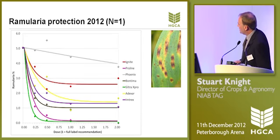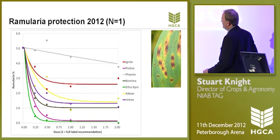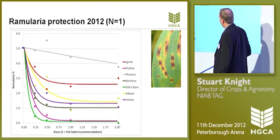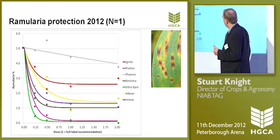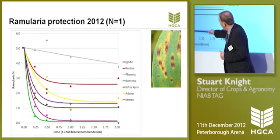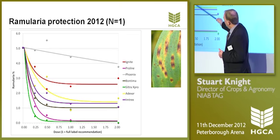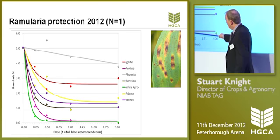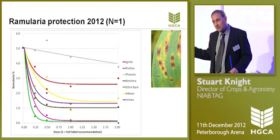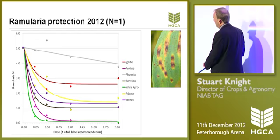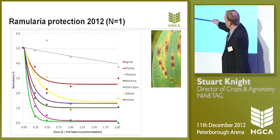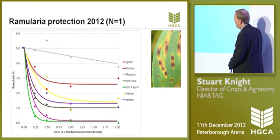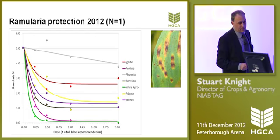Moving on to ramularia — a slightly different story. This is just from one trial in 2012. Phoenix was in the ramularia trial but not a lot of control coming from that. We know from previous work that Proline is very, very strong against ramularia, and we see that again here — a very high level of control from Proline, much better than Ignite for this particular disease. Not surprisingly, Siltra Xpro, which has got the prothioconazole, is doing a very good job of ramularia control. But in fact all the SDHIs contribute very usefully to ramularia control: Adexar is superior to Ignite because of the inclusion of the SDHI, and the straight Intrex fluxapyroxad is doing a very useful job against ramularia, as is Bontima, the isopyrazam-based treatment.